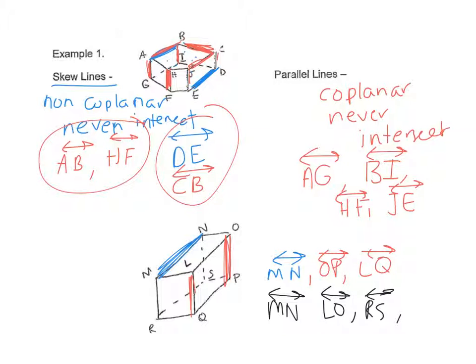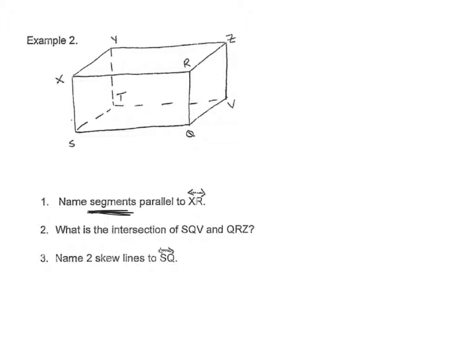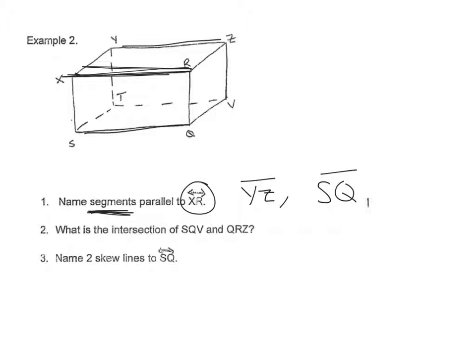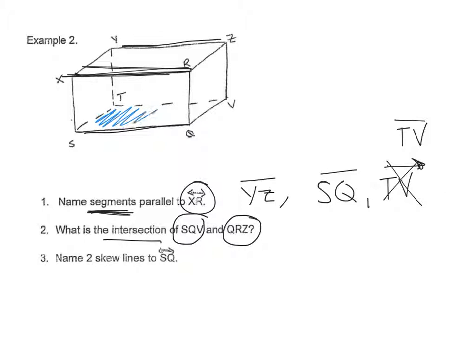For parallel lines: MN is parallel to LO, MN is parallel to RS, and MN is parallel to QP. To name two segments parallel to XR, I use segment notation: segment YZ is parallel, segment SQ is parallel, and segment TV also works. For the intersection of plane SQV and plane QRZ — remember three letters make a plane — SQV is the bottom and QRZ is the right side.